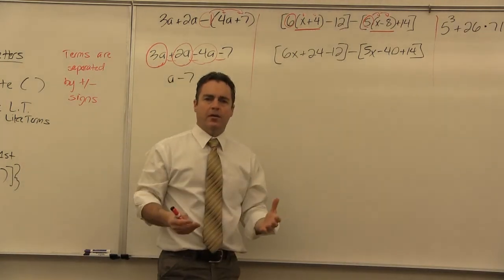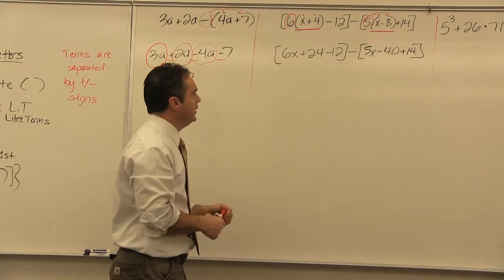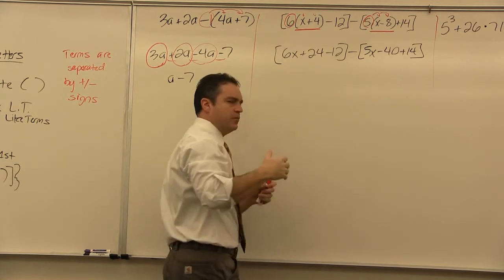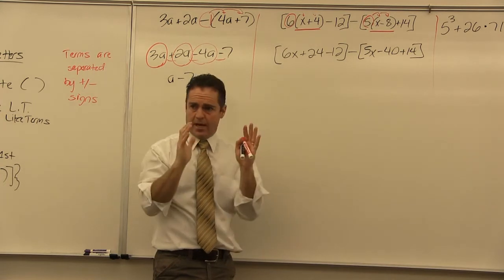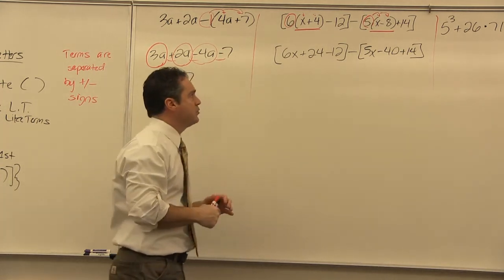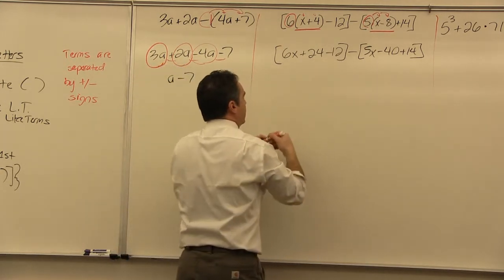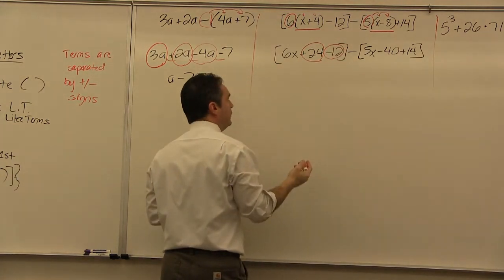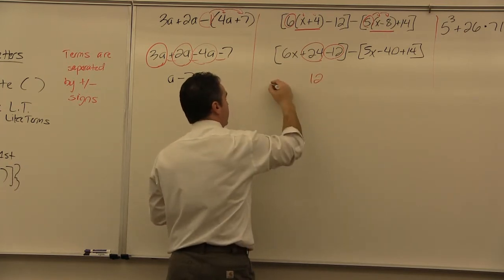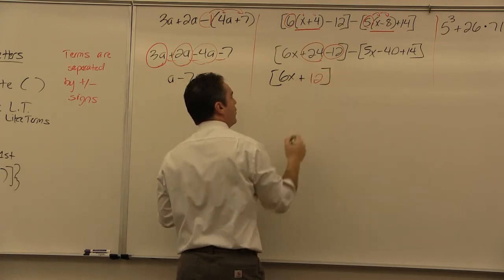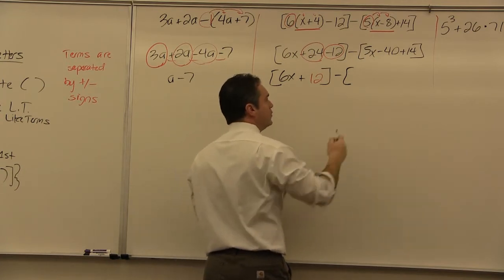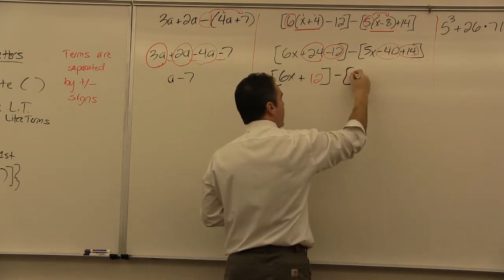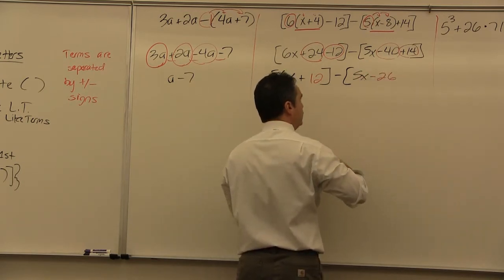Now we combine like terms within the parenthetic world before distributing the square brackets. Inside the first set: 24 and negative 12 combine to make 12, giving us [6x + 12]. Inside the second set: negative 40 and 14 combine to make negative 26, giving us [5x − 26].